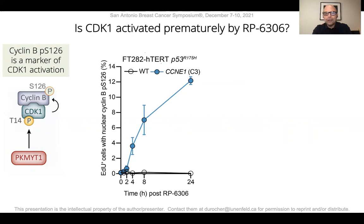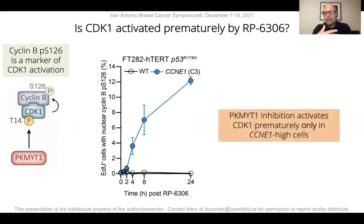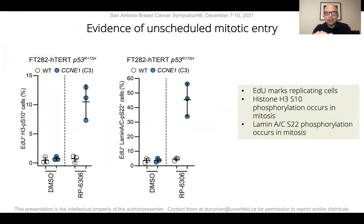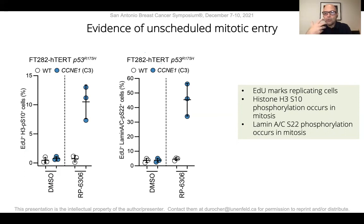We observed very clear aberrant activation of CDK1 in replicating cells — which is not normal, as CDK1 activation usually occurs in late G2 to early mitosis. Importantly, PKMYT1 inhibition activates CDK1 only in cyclin E1-high, cyclin E1-overexpressing cells. Associated with this, we also see evidence of unscheduled mitotic entry in replicating cells using multiple markers, namely histone H3 phosphorylation and lamin phosphorylation — again only in cyclin E1-high cells upon PKMYT1 inhibition.